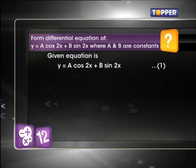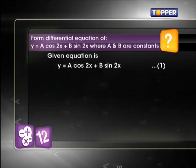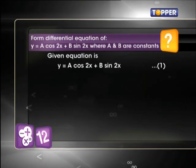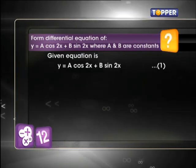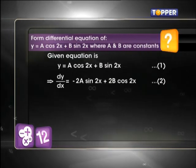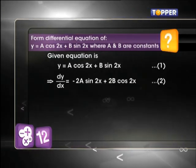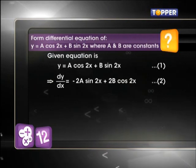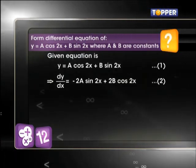Here y is a dependent and x is an independent variable. So first we differentiate with respect to x and we get dy/dx = -2a sin 2x + 2b cos 2x.